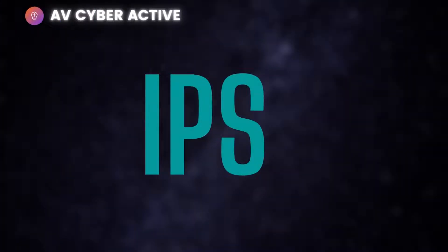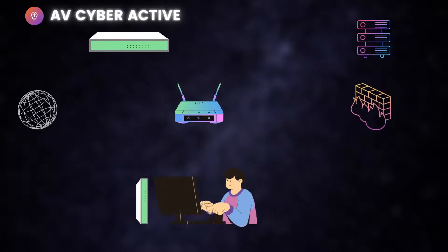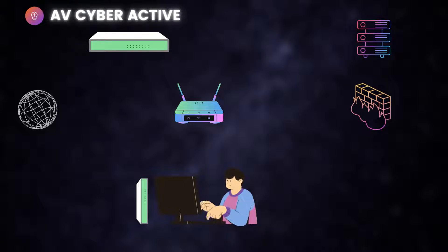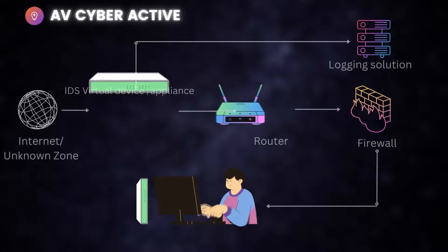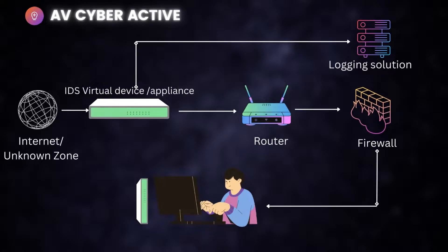Now let's take our IPS device, the Intrusion Prevention System. We bring up our regular corporate network — you've got your outside world, internet, router, the IPS appliance, and your firewall. This time the IPS device is placed inline.